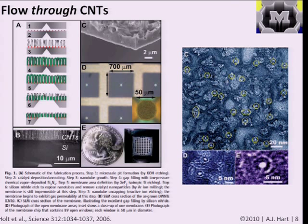One group grew a film of vertically aligned nanotubes a few microns high on a silicon wafer, then filled the spaces between the nanotubes with silicon nitride as a matrix. They opened up the nanotubes to create a suspended membrane—like a coffee filter over a hole in a plate, except your filter consists of vertical nanotube pipes. An SEM image shows the nanotubes on the silicon substrate, with the substrate etched out to create a cavity for flow. They also sliced the membrane and examined it in TEM to look at individual pores from above.